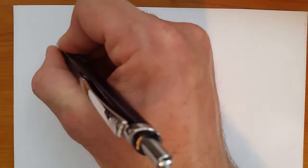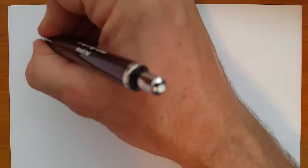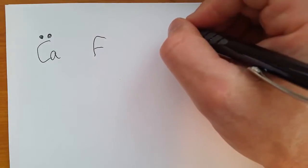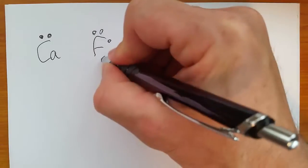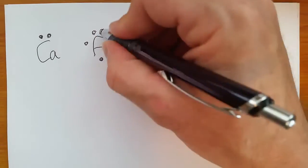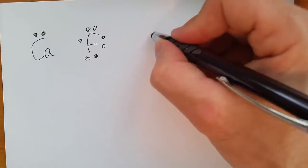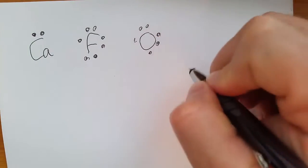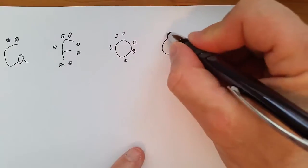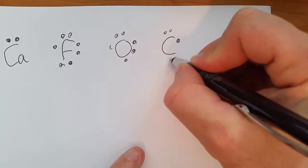Reminder about Lewis dot structures. If we do calcium, calcium is a group two, so it has two valence electrons. And the first two go together. We're going to draw fluorine, group 17, so it has seven valence electrons. One, two, the first two go together. And then after that they want to spread out. So one, two, three, four, five, spread out. Six, seven. Oxygen, one, two, three, four, five, six. Carbon, one, two, three, four.